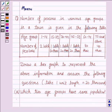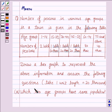Hello friends, let's discuss the following question. It says: the number of persons in various age groups in a town is given in the following table. Draw a bar graph to represent the above information and answer the following questions. So we'll first draw the bar graph and then we'll answer these questions.